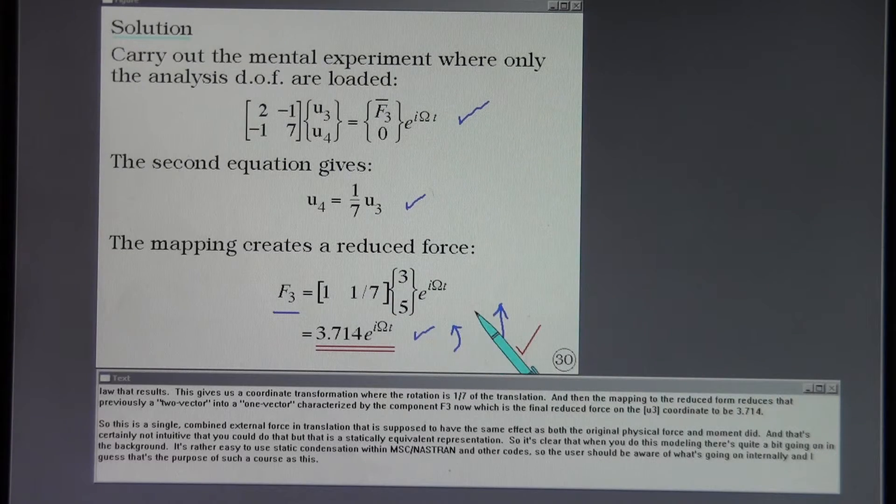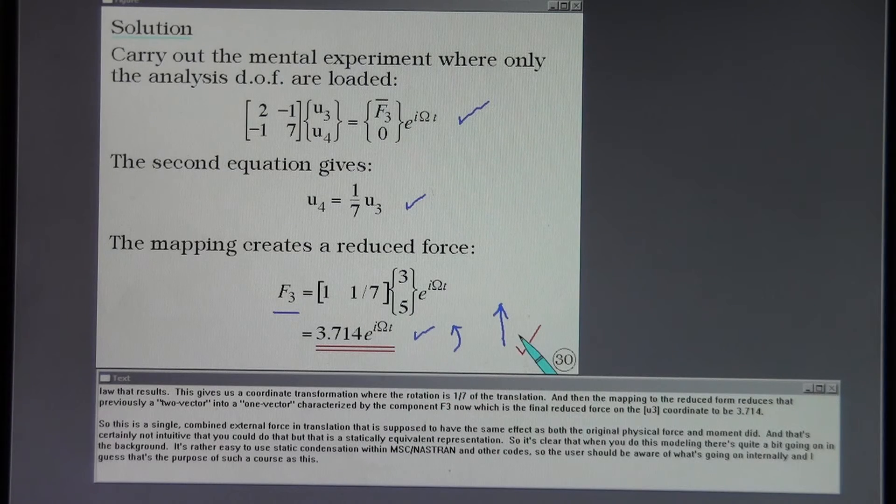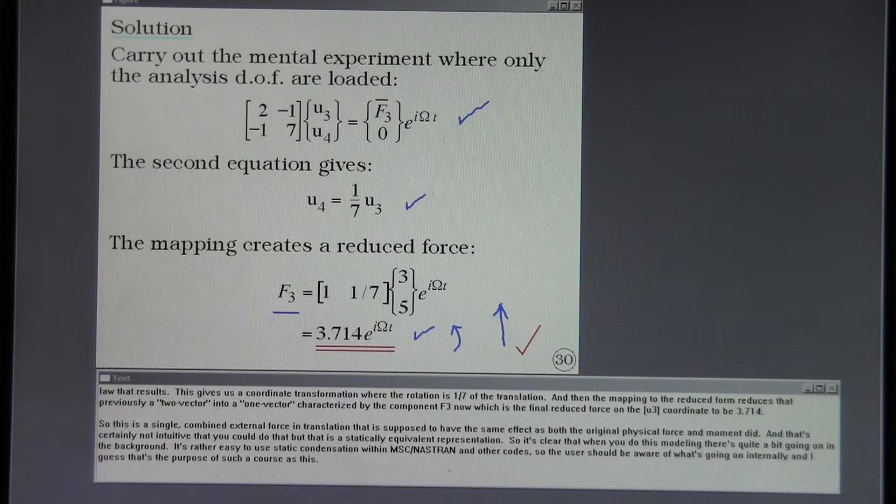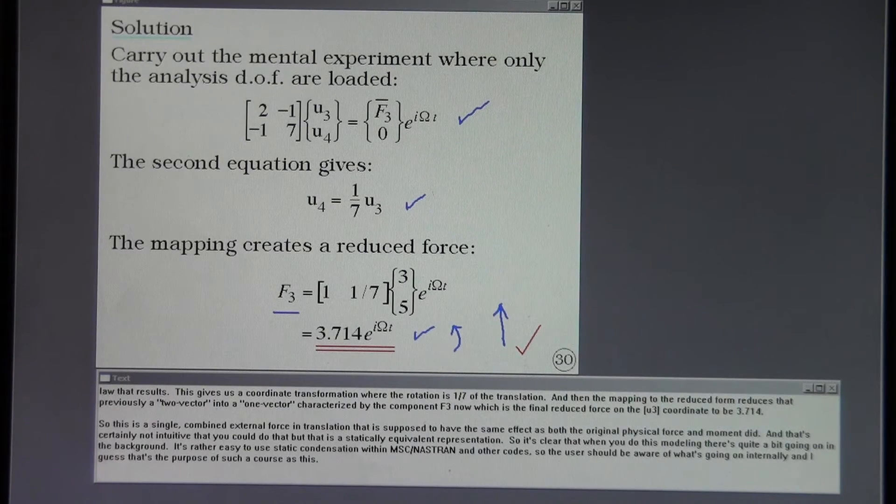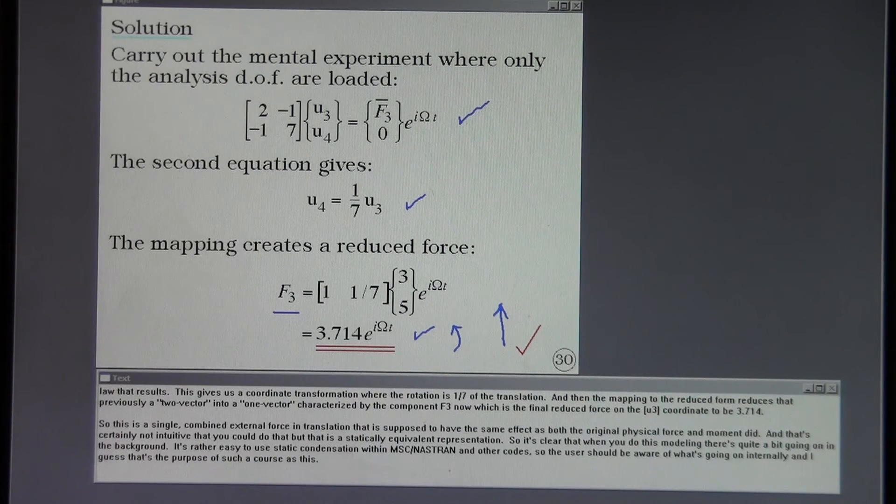So this is a single combined external force in translation that is supposed to have the same effect as both the original physical force and moment did. And that's certainly not intuitive that you could do that, but that is a statically equivalent representation. So it's clear that when you do this modeling there's quite a bit going on in the background. It's rather easy to use static condensation within MSC Nastran and other codes. So the user should be aware of what's going on internally. And I guess that's the purpose of such a course as this.